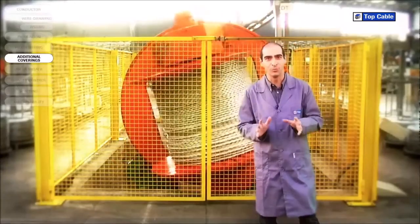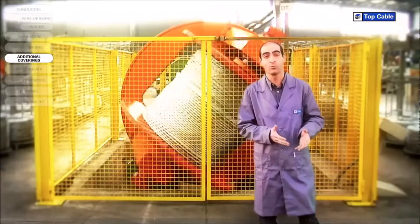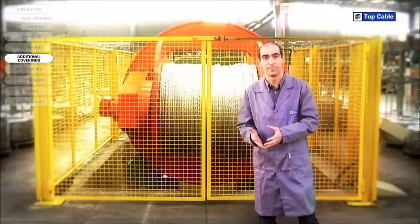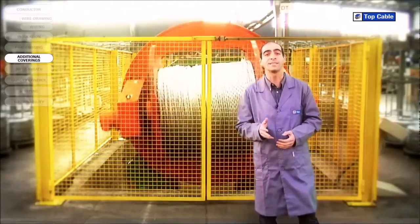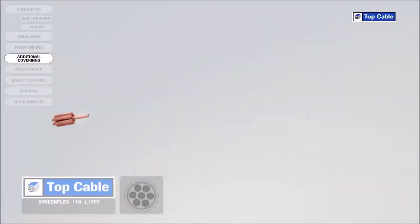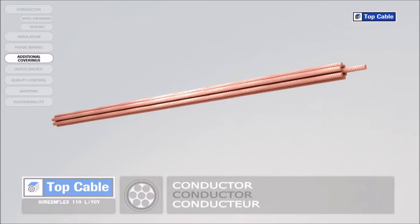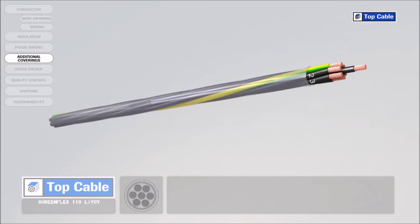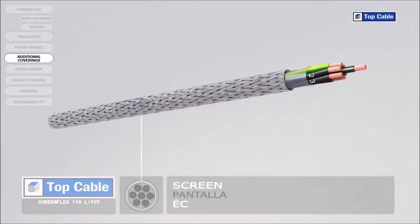And that is how an electrical cable is made. However, in some cases the cable may require additional elements in order to improve its protection or operation. Electrical coverings, also called screens, insulate the signals that circulate in the cable from possible external interference. They also shield the power cables to prevent them from interfering with adjacent signal circuits.